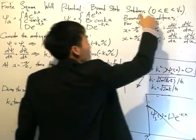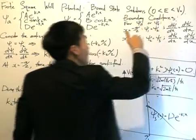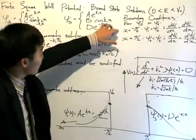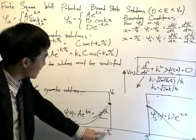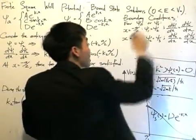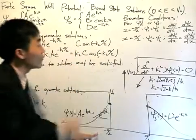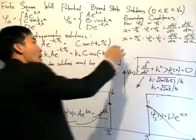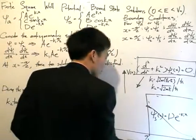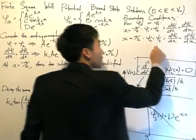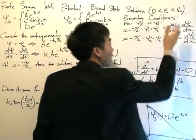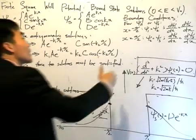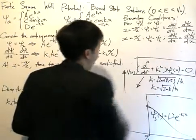For psi_a or psi_s, there are two points where we apply the boundary conditions. That's when x equals minus a/2, in which case psi_1 equals psi_2 and the first derivative of psi_1 equals that of psi_2, and when x equals a/2, we have psi_2 equals psi_3 as well as the first derivative. This can also be applied to psi_s.